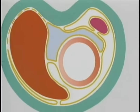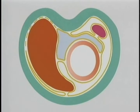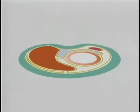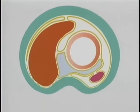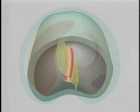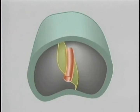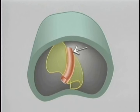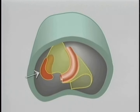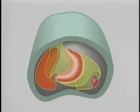We'll follow these changes from the start in a more three-dimensional way, going to a view from below. Here we're looking up into the upper part of the abdominal cavity. This is the diaphragm. Here's the foregut starting to develop, with the liver developing in the ventral mesogastrium and the spleen developing in the dorsal mesogastrium.